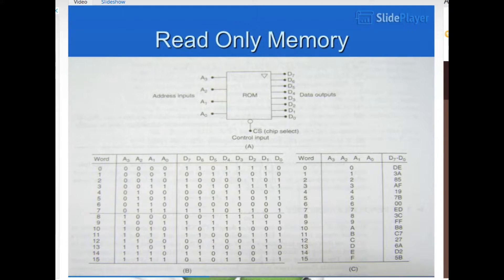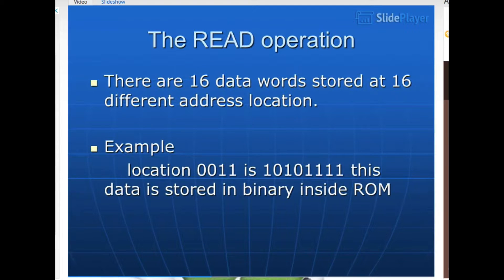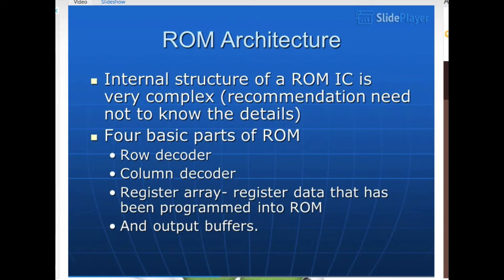Read only memory. The read operation. There are 16 data words stored at 16 different address locations. Example, location 0011 is 10101111. This data is stored in binary inside ROM. ROM architecture. Internal structure of the ROM IC is very complex. Recommendation, need not to know the details. Four basic parts of ROM: row decoder, column decoder, register array registers data that has been programmed into ROM, and output buffers.